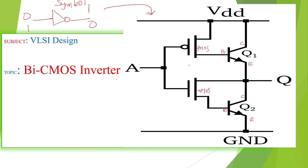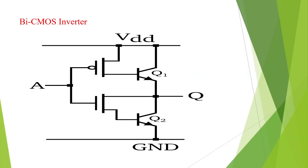The function is: while giving input 1, we should get 0 output. While giving input 0, we should get 1 output. That is the function for the inverter. I will explain here.